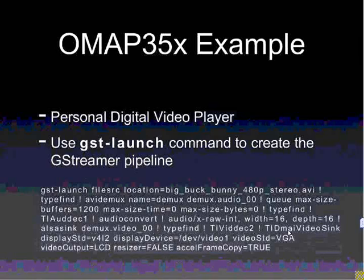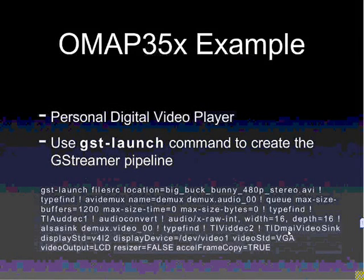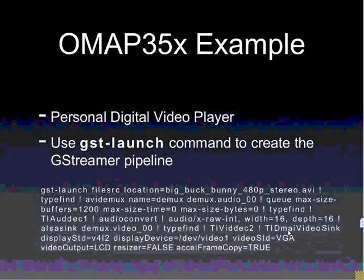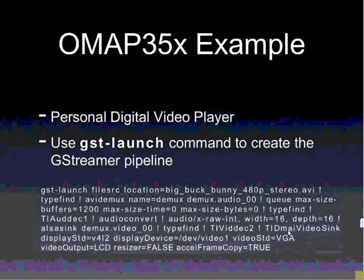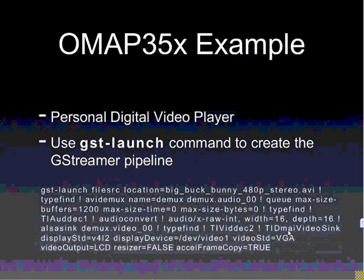Since it's demuxing, it's actually creating two streams: an audio stream and a video stream. Here I'm naming the audio stream 'demux audio', and I then queue the data and find an appropriate decoder for the encoded audio, pass it to the TI audio decoder which converts it, and then it sends it out the ALSA sink. Then we have to also have the pipeline for the video.